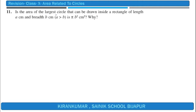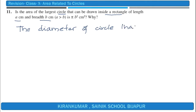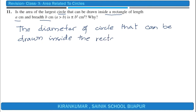Question 11: Is the area of the largest circle that can be drawn inside a rectangle of length a centimeters and breadth b centimeters (where a > b) equal to πb²? The diameter of the circle that can be drawn inside the rectangle is equal to the breadth of the rectangle.